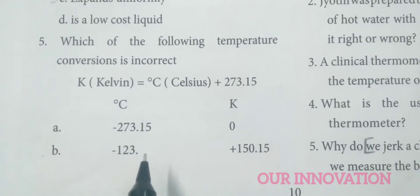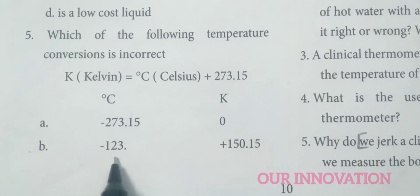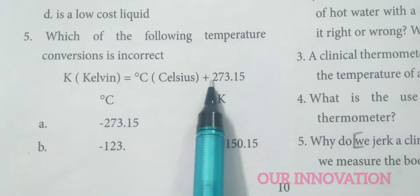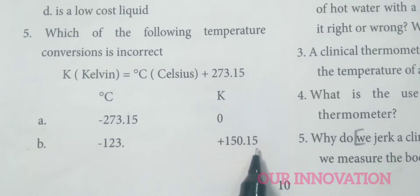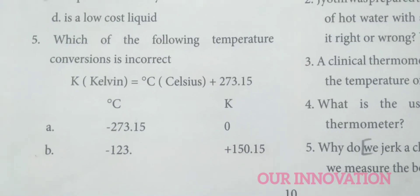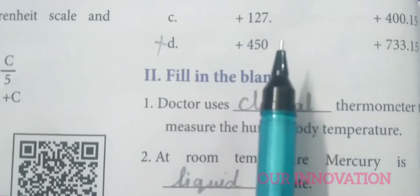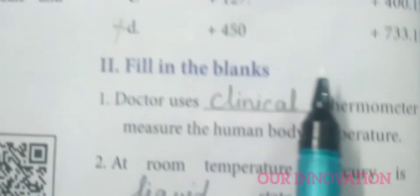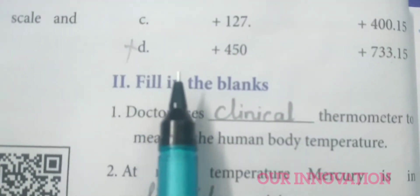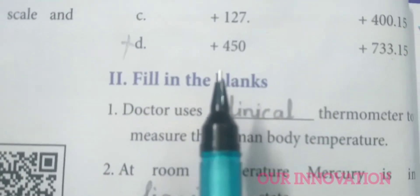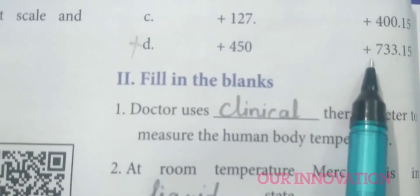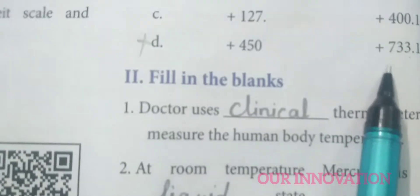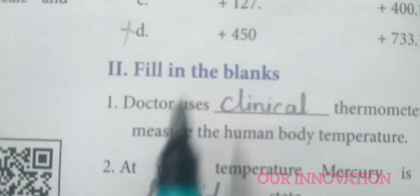Continuing with the incorrect answer question: option B gives plus 150.15, which is also correct. Option C: 127 Celsius plus 273.15 gives 400.15 — that is the correct answer. Option D: 450 Celsius substituted into the formula should give 723.15, but the given answer is different. Therefore, D is the incorrect answer, making it the correct choice for this question.